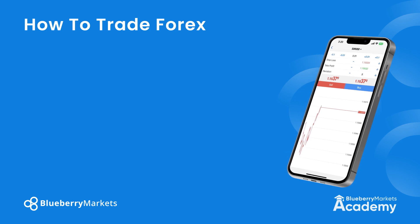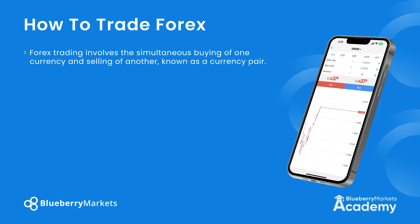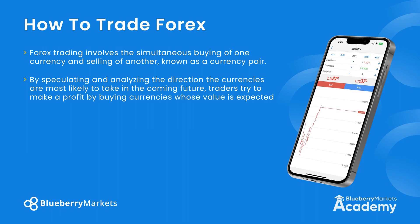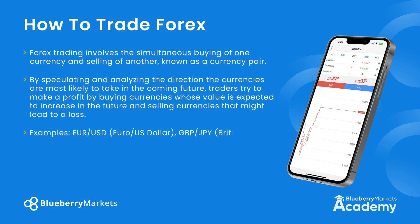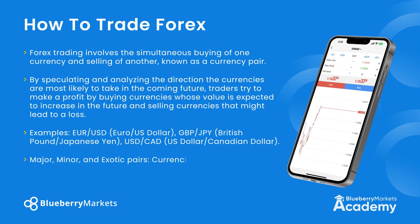So how do we actually trade Forex? Forex trading involves the simultaneous buying of one currency and selling of another — a currency pair. By speculating and analyzing the direction currencies are likely to take, traders try to profit by buying currencies expected to increase in value and selling those that might lead to a loss. Examples include EUR/USD and GBP/JPY. Currencies are categorized as major, minor and exotic pairs based on trading volume and liquidity, such as USD versus the Mexican peso.